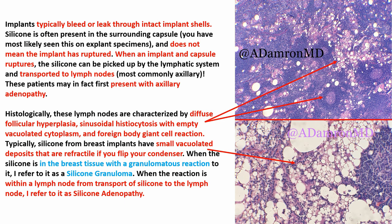When a patient has a small ruptured implant that doesn't have a reaction in the breast — no pain, no deformity, just a small rupture — the patient may in fact present with axillary adenopathy as the first presenting symptom that a ruptured implant has occurred. These lymph nodes are characterized by findings like diffuse follicular hyperplasia and prominent sinus histiocytosis with those empty vacuolated cytoplasm throughout. Noticing that they have refractile material by flipping your condenser, you're going to see that.